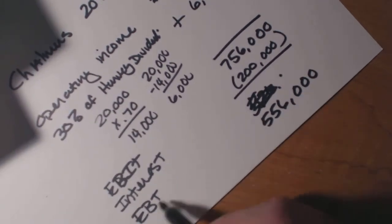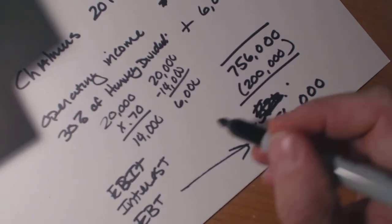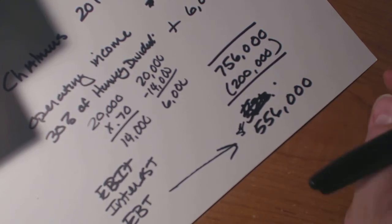So the EBIT, which we're solving for, is $556,000. Now, this is the earnings before taxes. This will lead us into how much we need to pay in taxes.